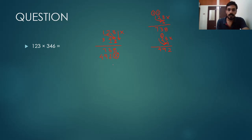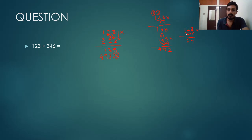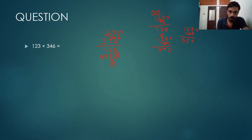In the third step, we multiply 123 by the hundreds place digit 3. So 3 times 3 is 9, 2 times 3 is 6, 1 times 3 is 3. In the third step, we do not write in the ones or tens place — we start from the hundreds place. So we write 369 here.